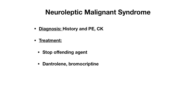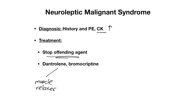NMS is diagnosed based on history and physical exam, and elevated CK can also help. To treat NMS, you need to stop the offending agent immediately. You can then use dantrolene as well as bromocriptine — you will need to know both of these medications. Dantrolene works as a muscle relaxer and helps with the rigidity, while bromocriptine works as a dopamine agonist and reverses the underlying pathophysiology of NMS.